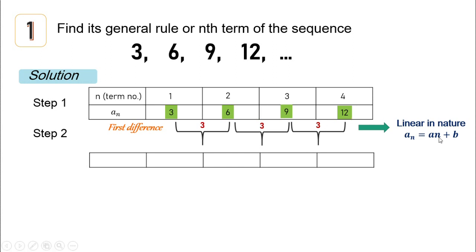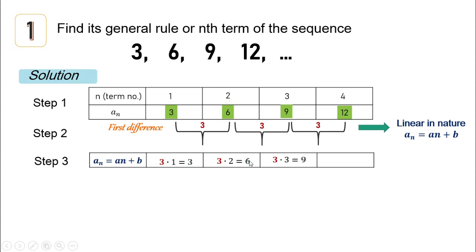Now we're going to find the value of a and b. Since n is the term number, for step three we find a formula where we can get the values 3, 6, 9, and 12. For the first term, 3 times 1 equals 3. Note that 3 here is the value of a, which comes from the common difference, and 1 is the value of n. To get 6, we multiply 3 times 2, where 2 is the term number. For the third term, 3 times 3 equals 9.